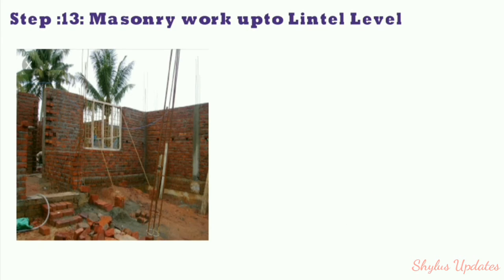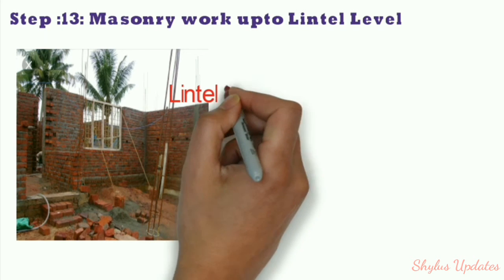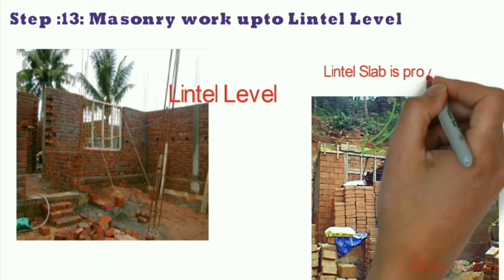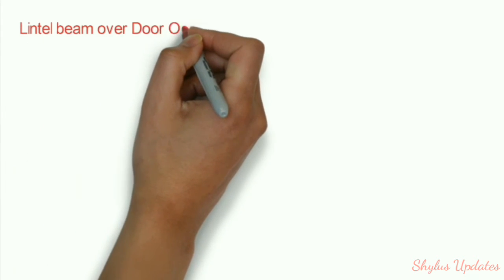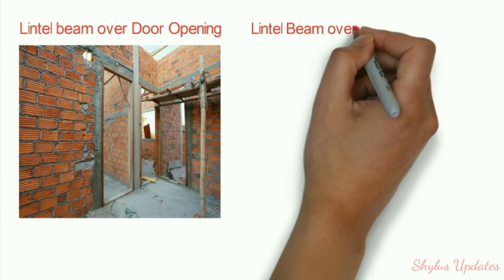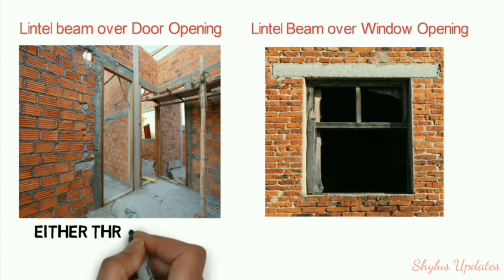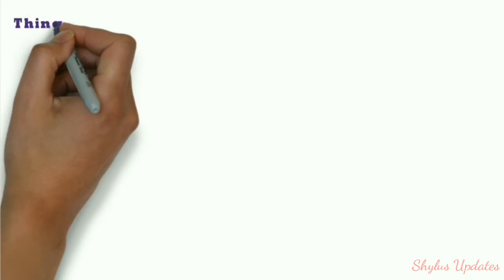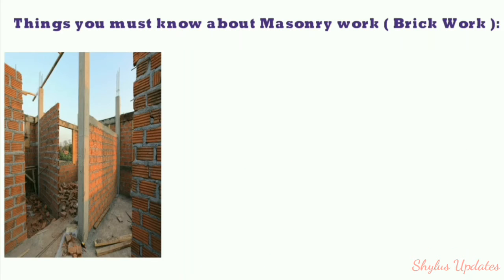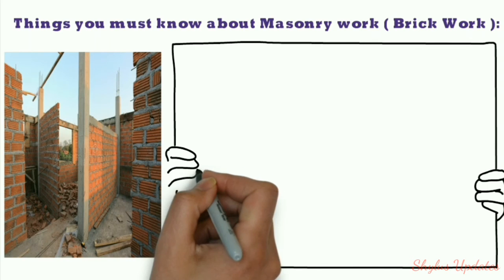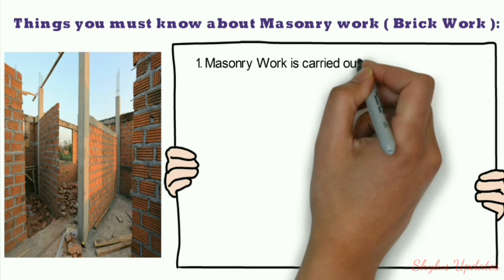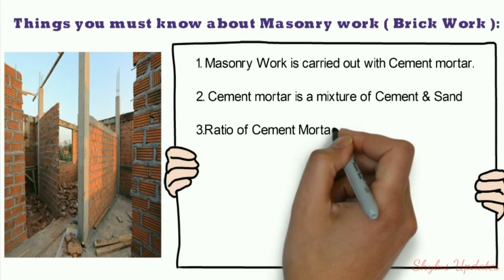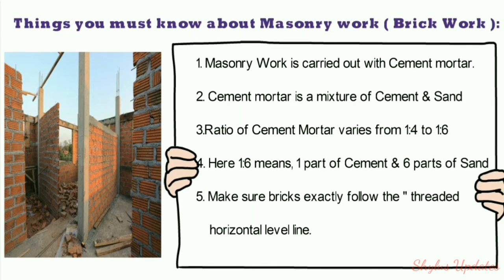Step 13: Masonry work up to lintel level. A lintel beam is provided here — over door openings and window openings. Either through lintel or cut lintel can be provided, but cut lintel is more economical. Masonry work is carried out with cement mortar, a mixture of cement and sand. The ratio of cement mortar varies from 1:4 to 1:6 — for example, 1:6 means 1 part cement and 6 parts sand.